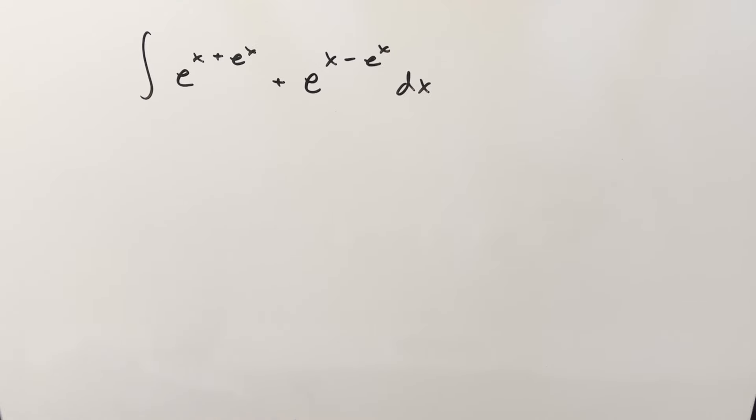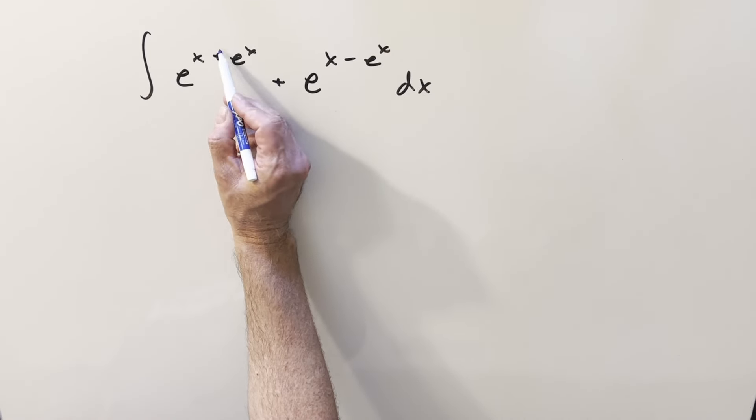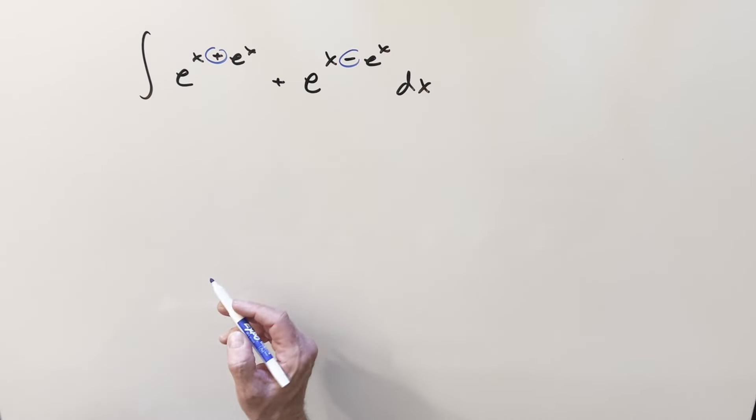This kind of problem comes up a lot with integration bees where they try to confuse us with some towers on the exponential. But I think what I want to do on this one, first of all, I don't like having addition or subtraction in the exponent, so I think I want to write this a little differently.